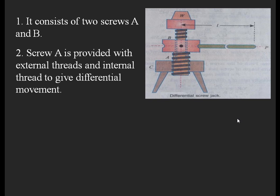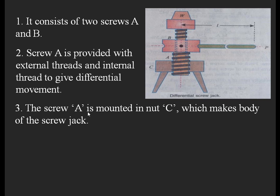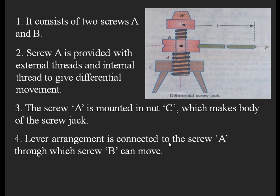Screw A is provided with both external threads and internal threads to give the differential motion. Screw B moves inside screw A through these internal threads. Screw A is mounted in nut C, which forms the main body of the screw jack. A lever arrangement is connected to screw A, through which screw B can move. This lever arm is connected to a header on screw A.